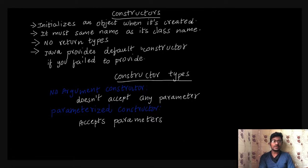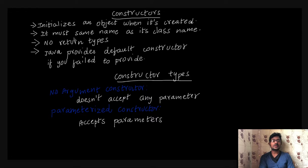A constructor is used to initialize an object when it is created. For example, a class constructor must have the same name as its class name. We will initialize the object. In the next video, if the constructor name does not match the class name, that is a syntactical error.